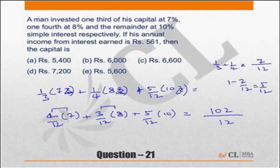You can find the rate of interest and get the answer. If it is an annual interest, what is the capital. So the rate of interest is, or in other words, this is nothing but 102 divided by 12, or 8.5%. So the rate of interest is 8.5% of principal is equal to 561.